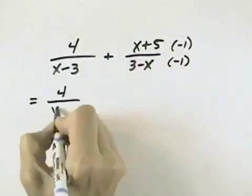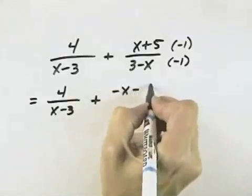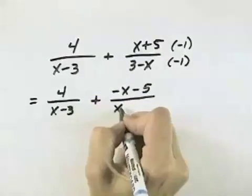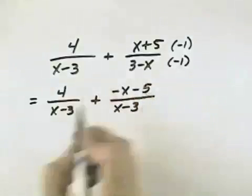When I do that, the first fraction is remaining the same, but what I would have is negative x minus 5 in the numerator, and this would become negative 3 plus x, which is the same as x minus 3. The x would become positive and the 3 would become negative.